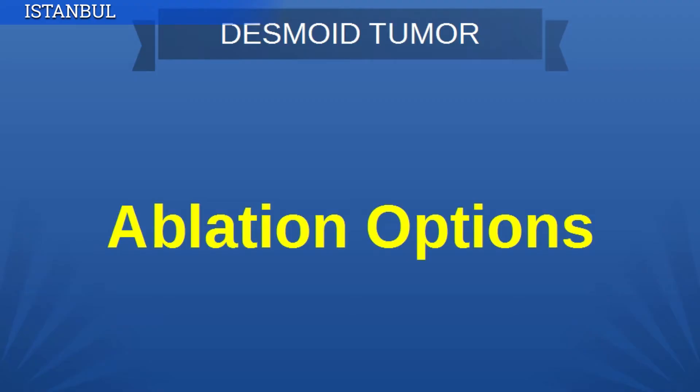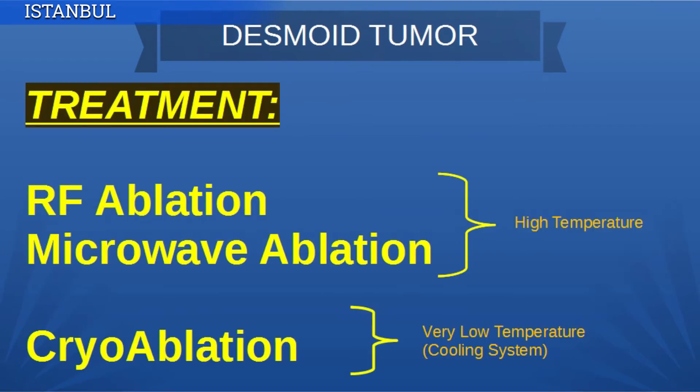Hello everyone. In this part of the video, I'm going to talk about ablation options for desmoid tumors. When we look at the treatment options for desmoid tumors, we can see many ablation options, but RF ablation, microwave ablation, and cryoablation are some of these. We can group them into two categories because RF ablation and microwave ablation give very high temperature to the tissue.